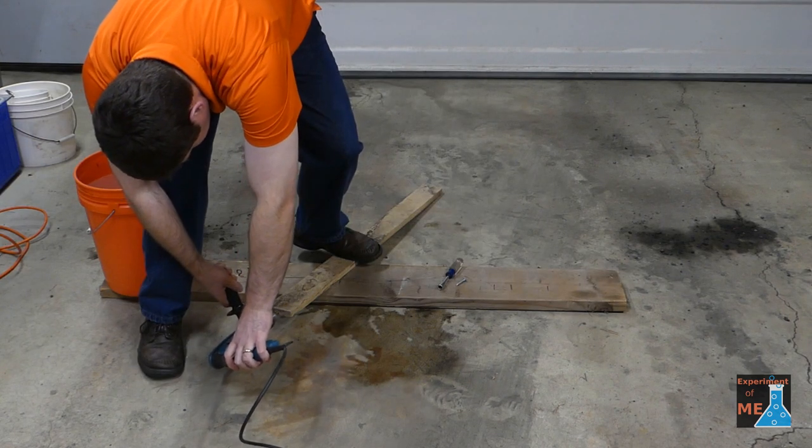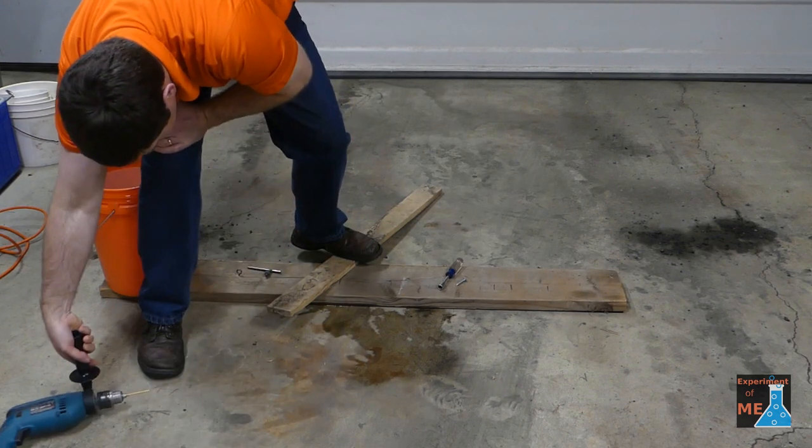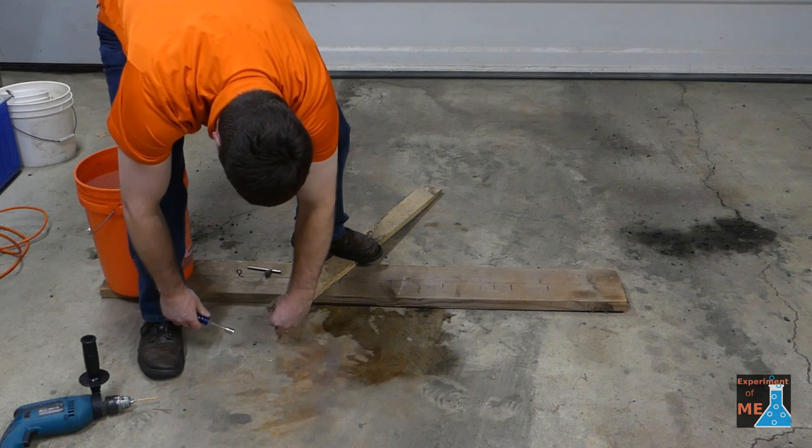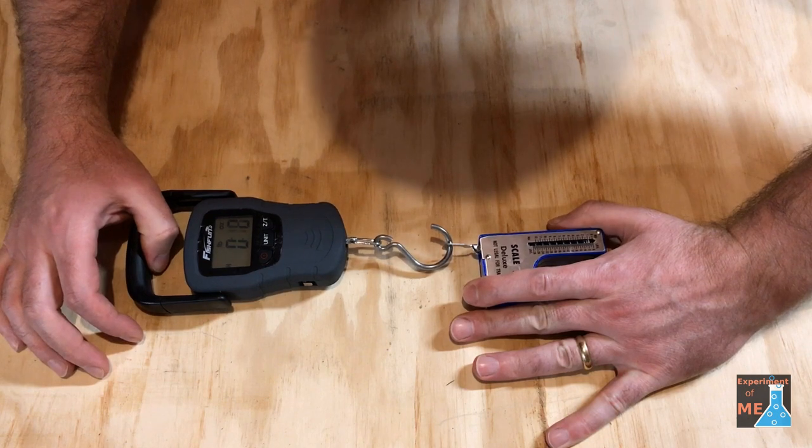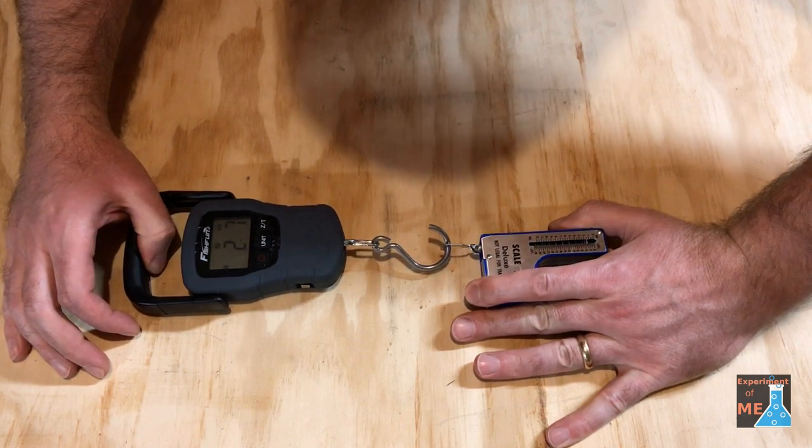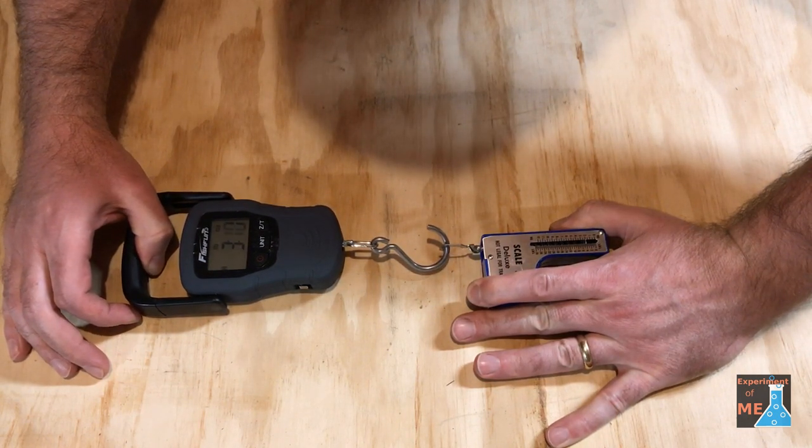Then I need to install a bolt in the top of my lever in order to wrap the rope around, and then I need to test my scales to make sure they measure close to the same.